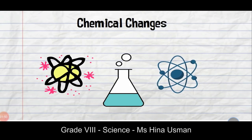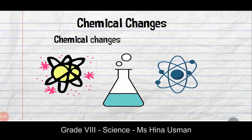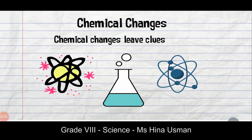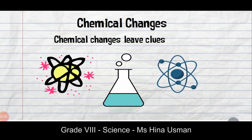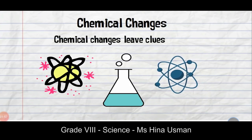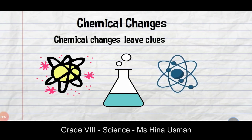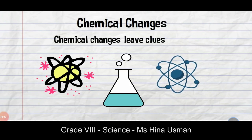The differences between physical changes and chemical changes are summarized here. Now let's start the main topic: chemical reactions. To represent chemical reactions in chemistry we use equations. In Grade 8 we will use word equations.